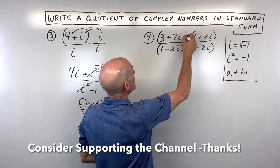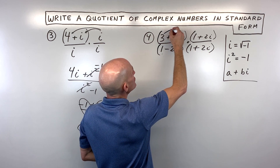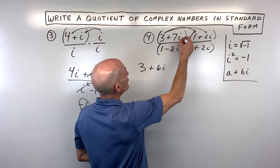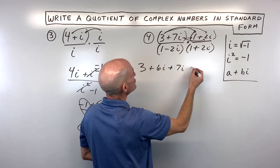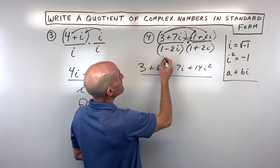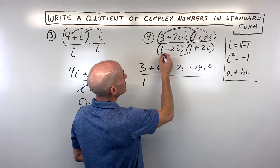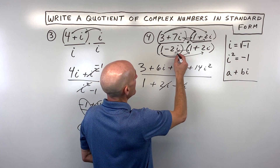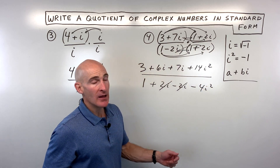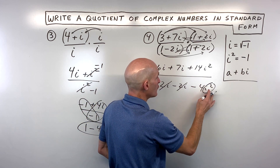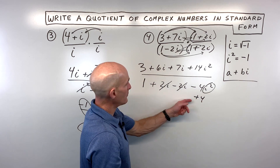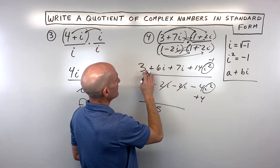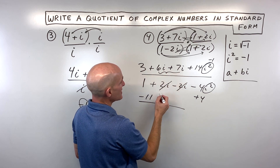We've got a binomial times a binomial in both numerator and denominator, so let's use the distributive property twice. In the numerator: 3 times 1 is 3, 3 times 2i is 6i, 7i times 1 is 7i, and 7i times 2i is 14i squared. In the denominator: 1 times 1 is 1, 1 times 2i is positive 2i, negative 2i times 1 is negative 2i — so the imaginary parts cancel — and negative 2i times positive 2i is negative 4i squared. Since i squared is negative 1, negative 4i squared becomes positive 4, so 1 plus 4 gives us 5 in the denominator. In the numerator, 14i squared is negative 14, and negative 14 plus 3 is negative 11. Adding 6i and 7i gives us 13i.